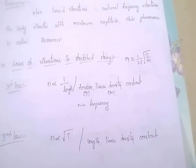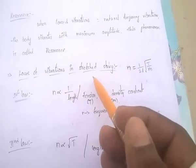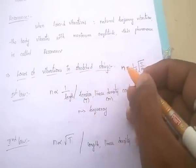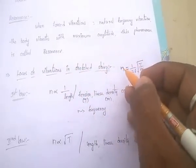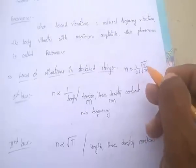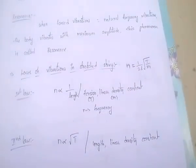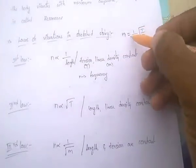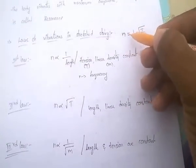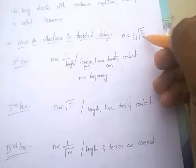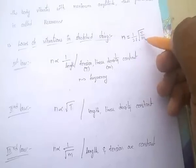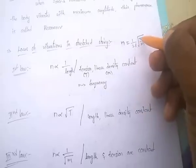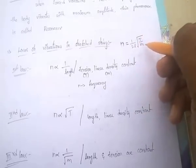For vibrations in a stretched string, the frequency is given by n = 1/(2l) × √(T/m), where l is the length, T is the tension, and m is the linear density. The first law states that when T and m are constant, n is inversely proportional to the length l.